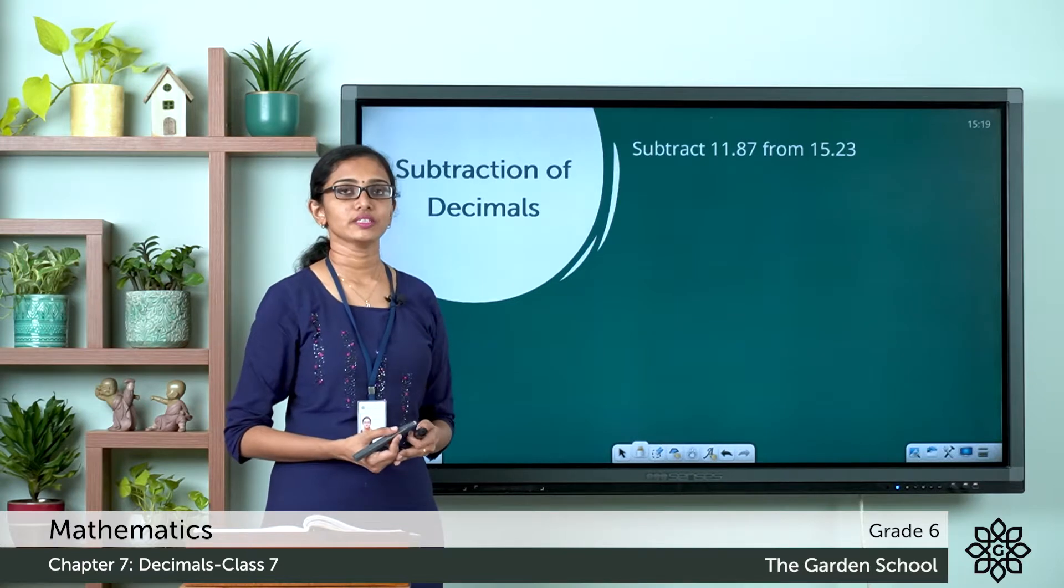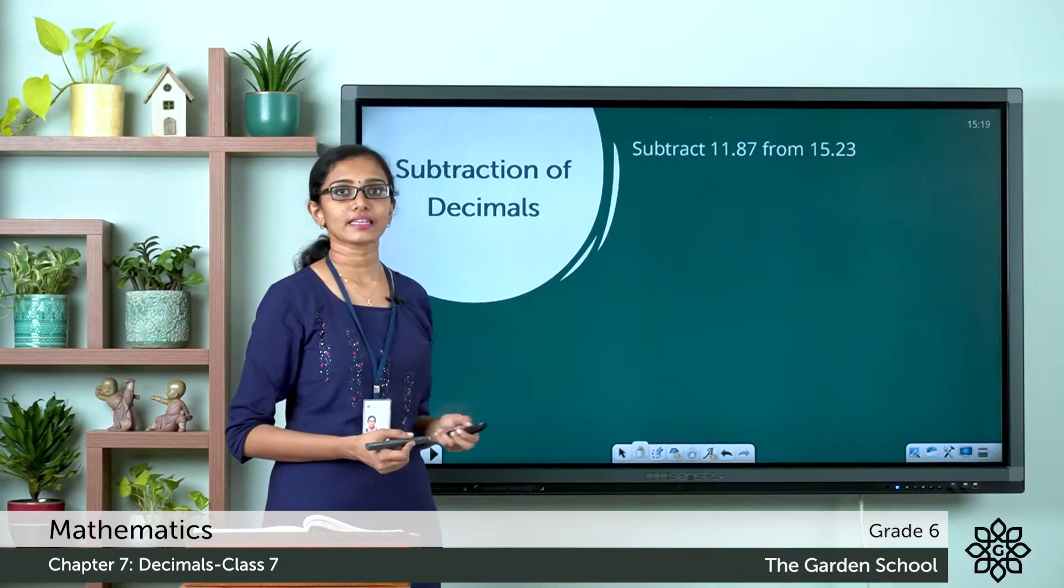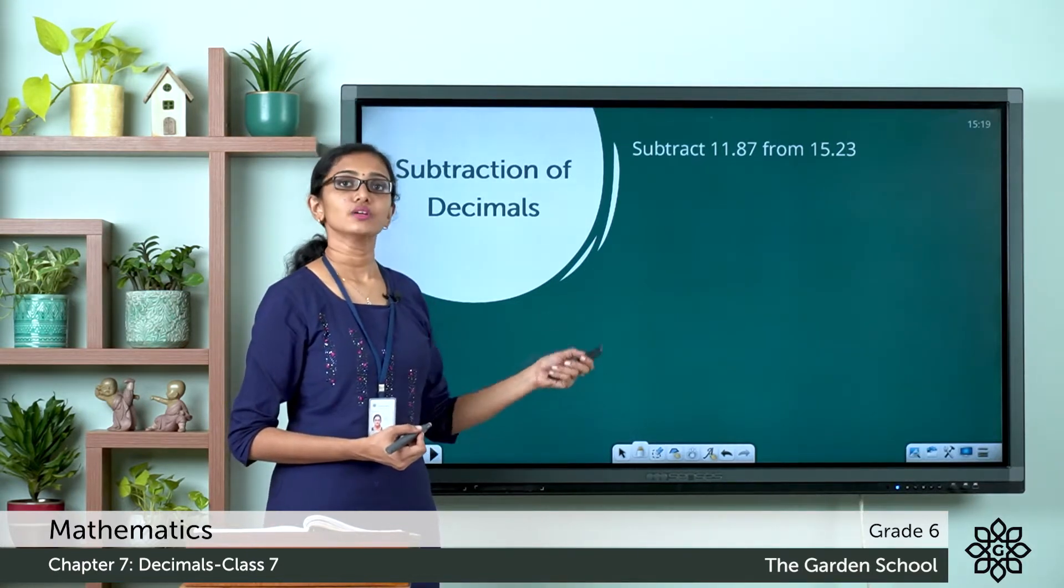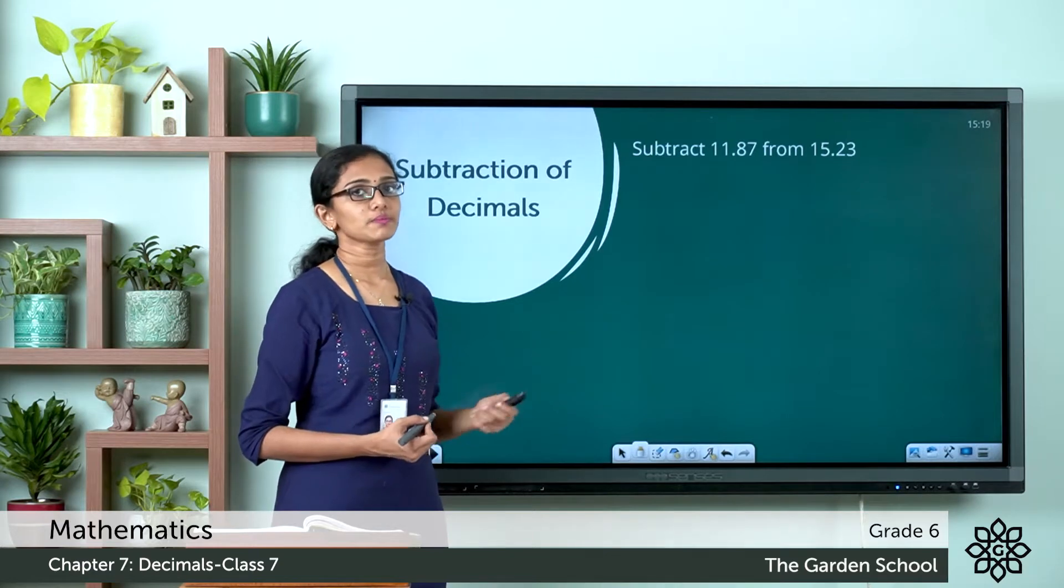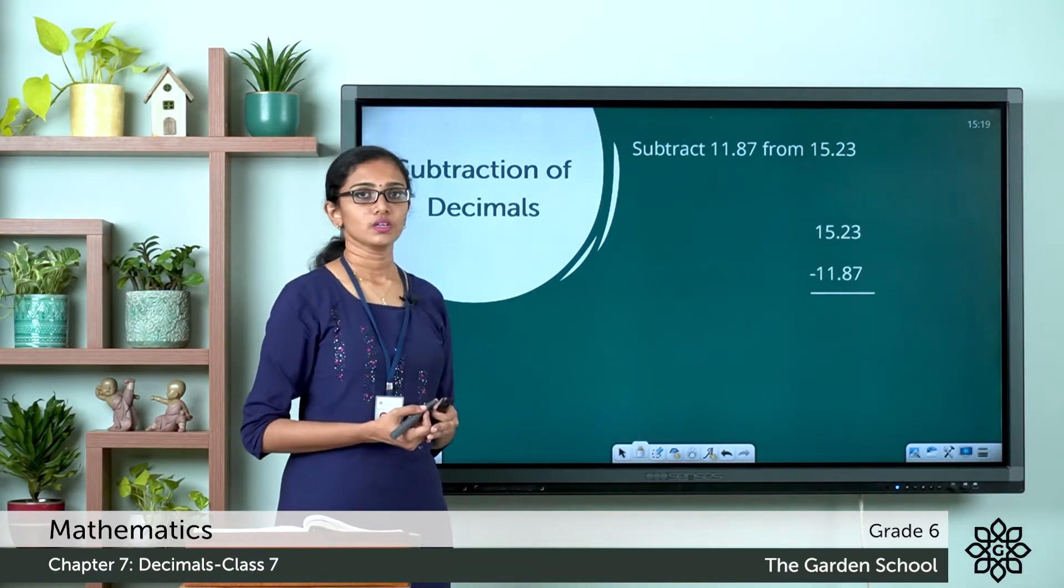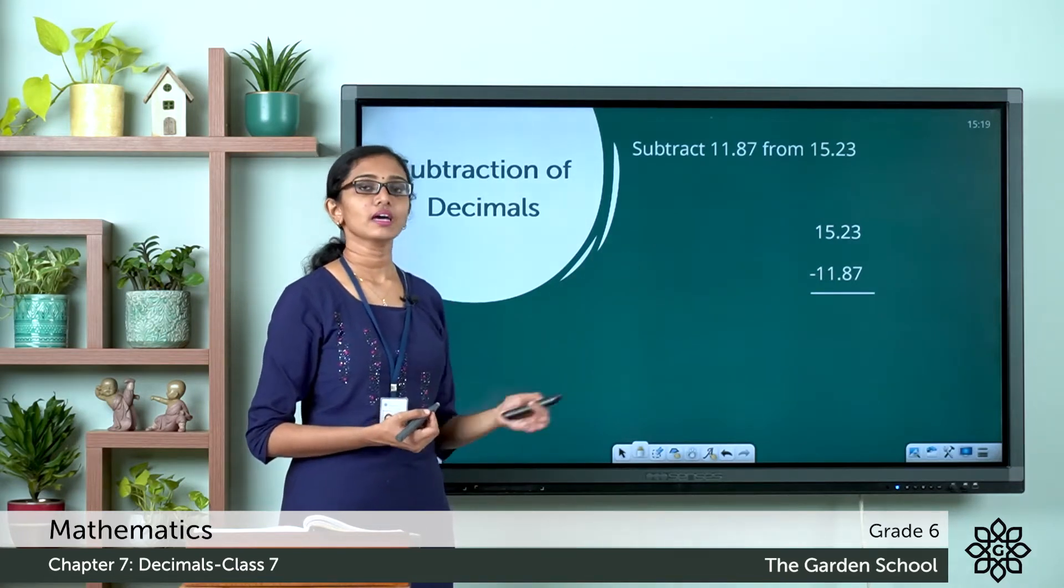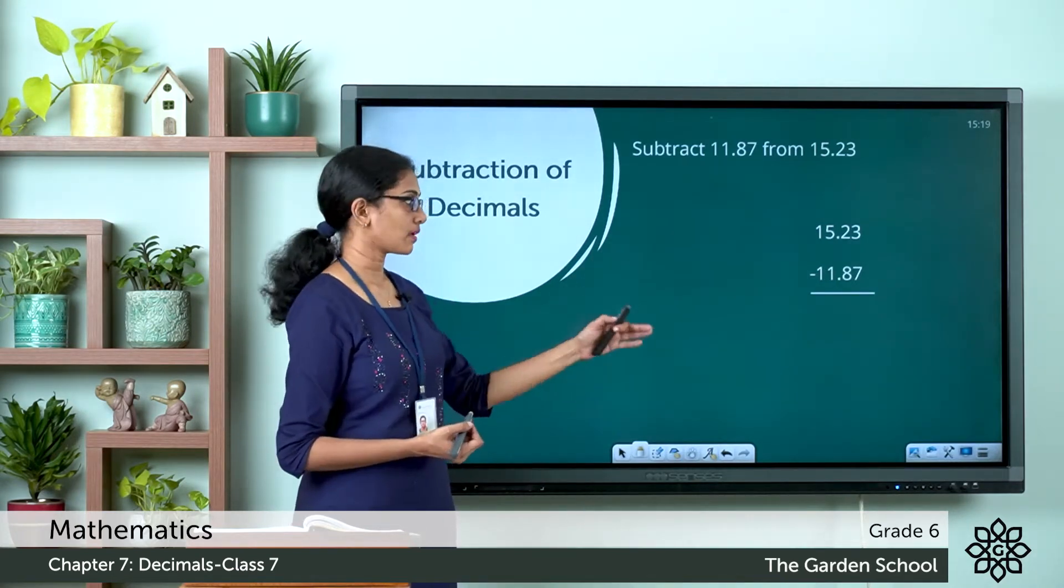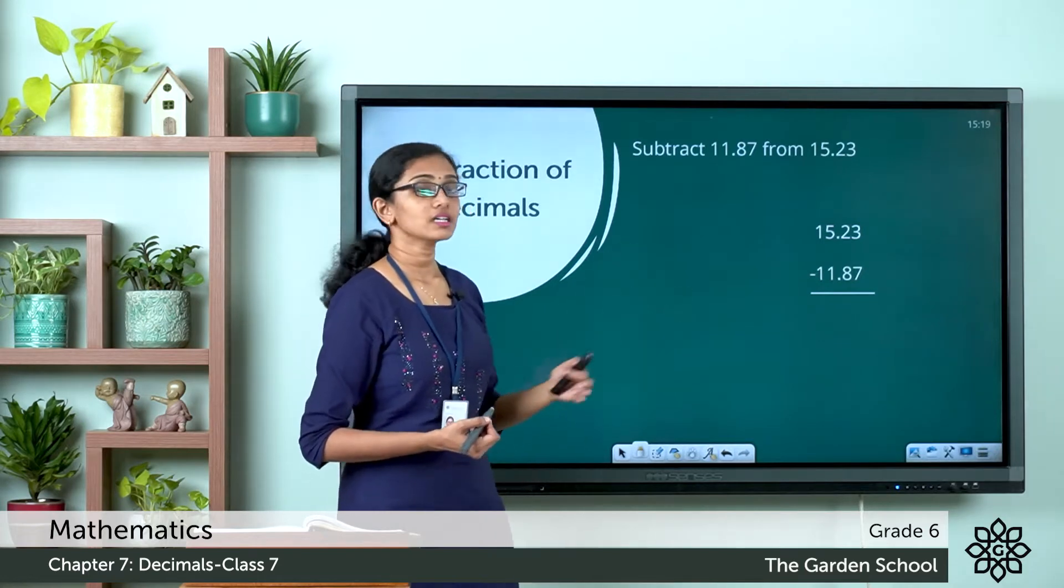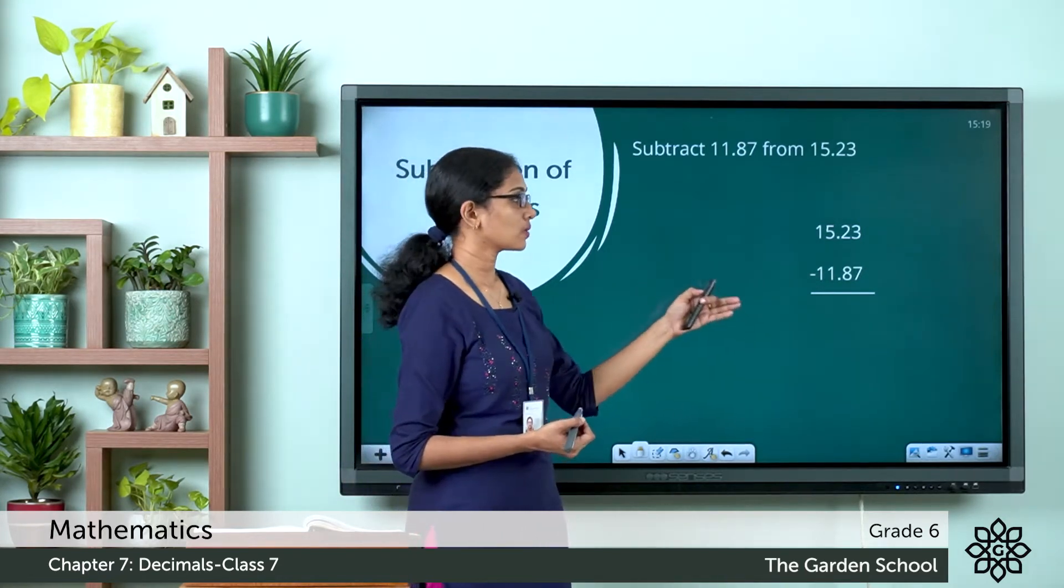As in the case of addition, the first step is to write the given numbers vertically so that the decimal points lie one below the other. So here we have written the bigger decimal number at the top and the smaller decimal number at the bottom. See the decimal points lie one below the other.